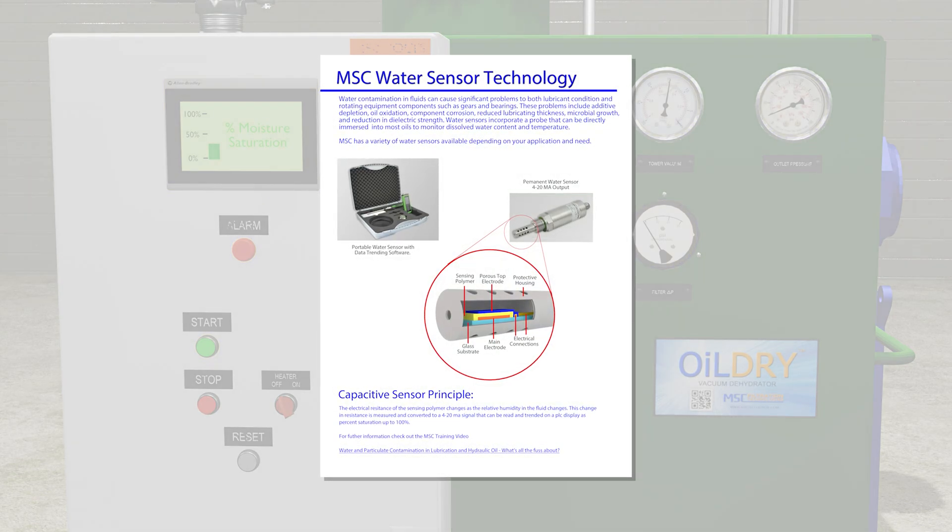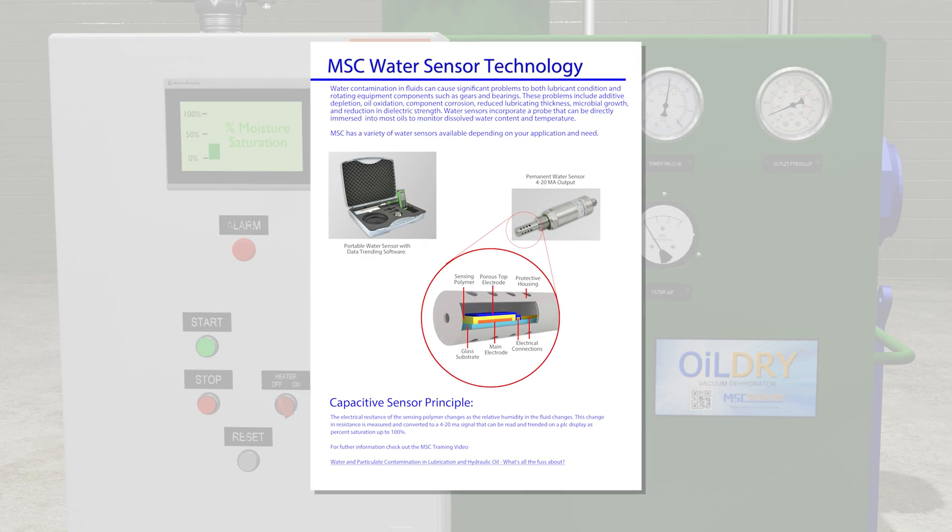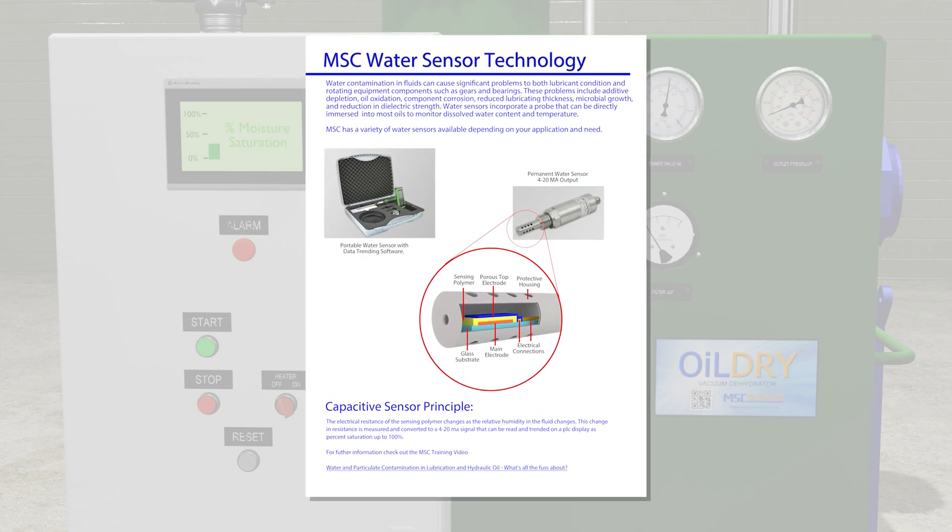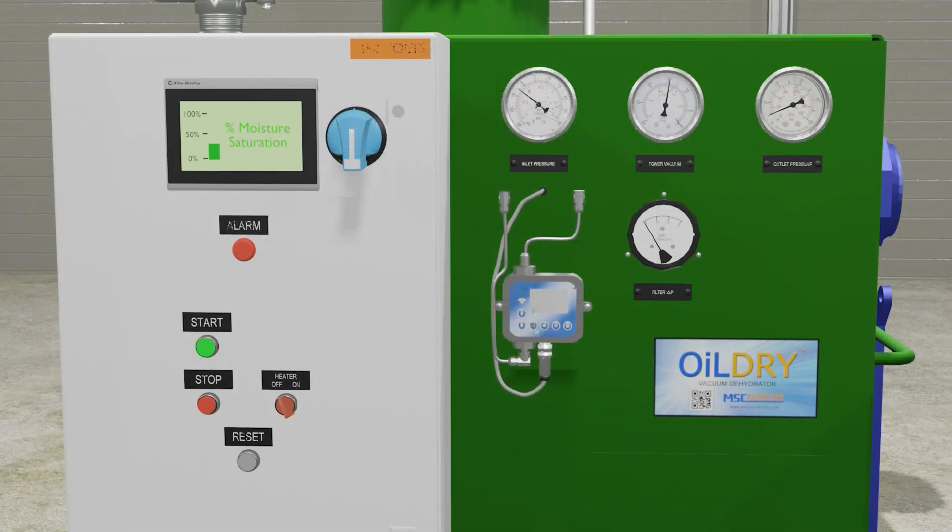Since water contamination is obviously a critical concern, the Oil Dry is equipped with a standard water saturation sensor, which provides operators with an accurate level of water saturation on the PLC display.